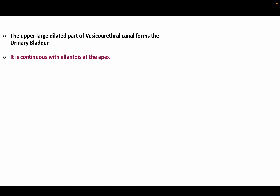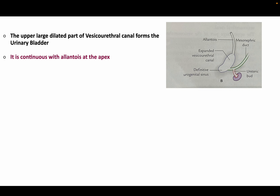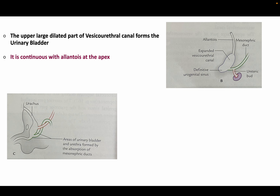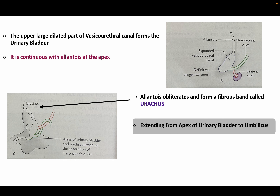The upper large dilated part of the vesicourethral canal contributes to the urinary bladder. It is continuous with the allantois at the apex, and the allantois later obliterates and forms a fibrous band called the urachus, extending from the apex of the urinary bladder to the umbilicus. This urachus is called the median umbilical ligament.